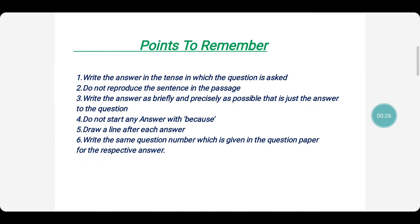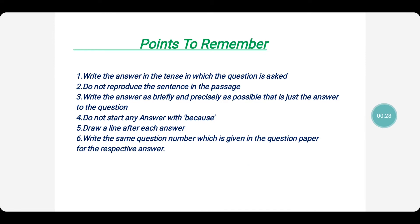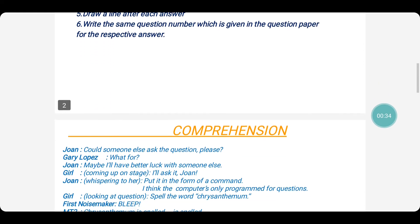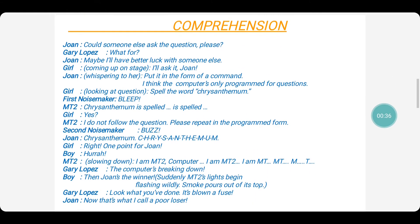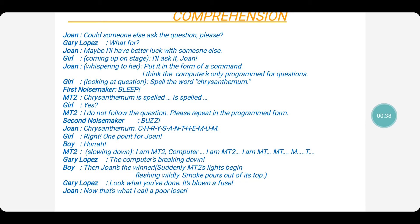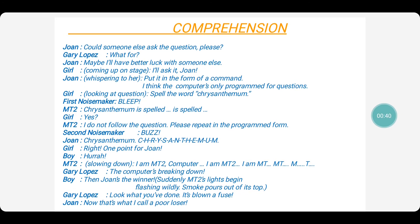Here are some points to remember. Please go through them before you attempt the comprehension. Here is the passage for comprehension. Here in this lesson we see that there is a competition between Joan and the computer MT2.